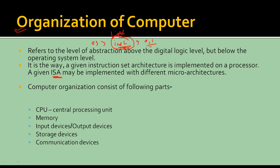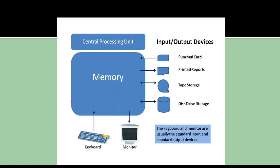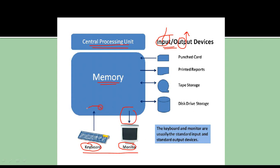There are certain parts of the organization of a computer: the CPU (central processing unit), memory, input and output devices, storage devices like pen drives, and communication devices. In this diagram, we can see the structure of a computer — there is memory, a central processing unit, a keyboard, a monitor, and certain input and output devices. Input devices are those from which we give input to the computer, and output devices are those from which we get our output. The keyboard is an input device and the monitor is an output device.